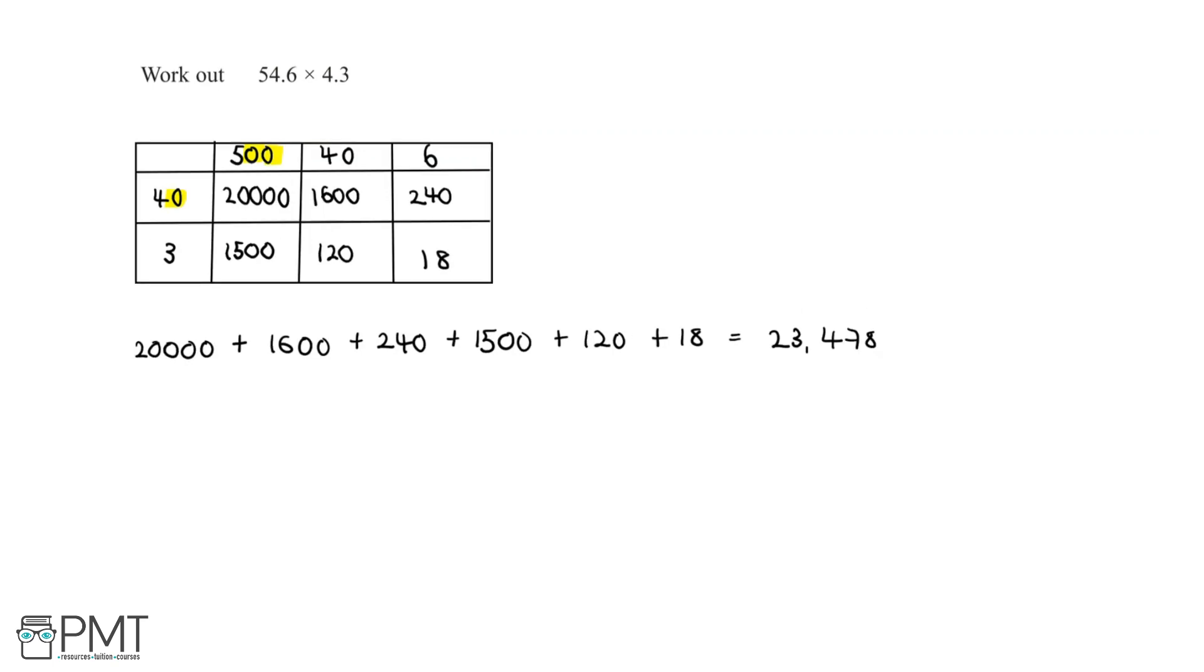Now we need to work out where the decimal point goes in our final answer. The numbers that we started off with were 54.6 and 4.3, and we manipulated these numbers to get 546 and 43. We need to go back and figure out what it is that we did. We started off with 54.6, and to get to 546, we multiplied this by 10.